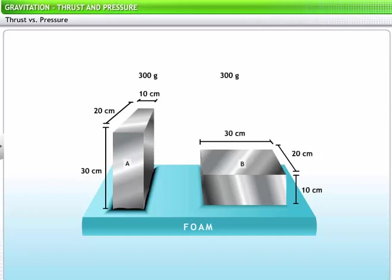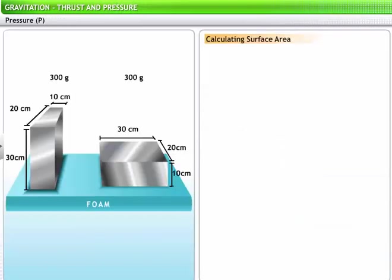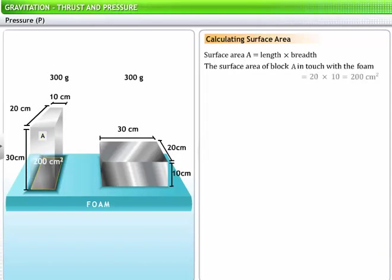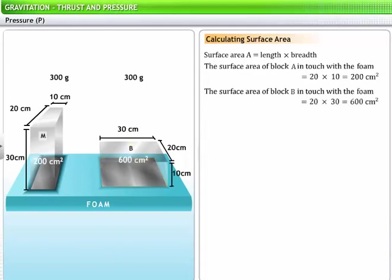Considering that both the blocks have the same length, breadth, height, and weight, why do you think we see this difference in the compression of foam? This difference can be attributed to the difference in pressure exerted by each block. Block A was placed vertically over the sheet of foam while block B was placed horizontally. The surface area of block A in touch with the foam is 200 square centimeters. On the other hand, the surface area of block B in touch with the foam is 600 square centimeters.